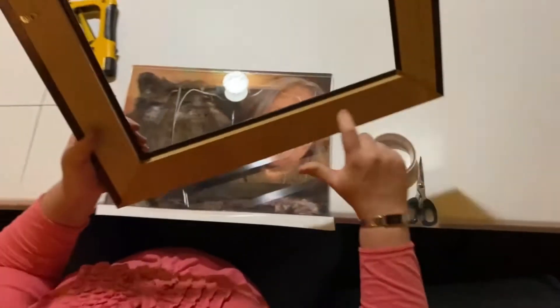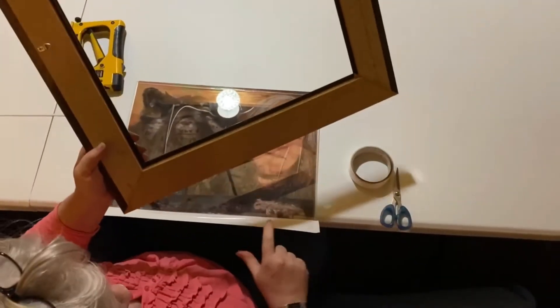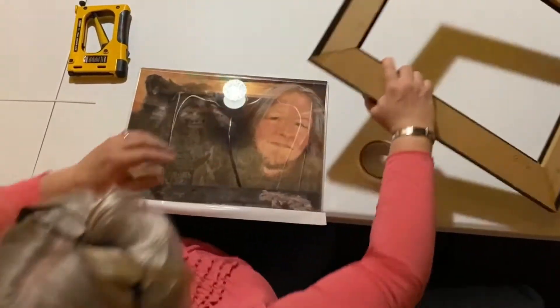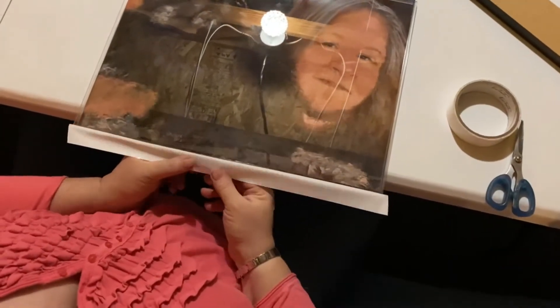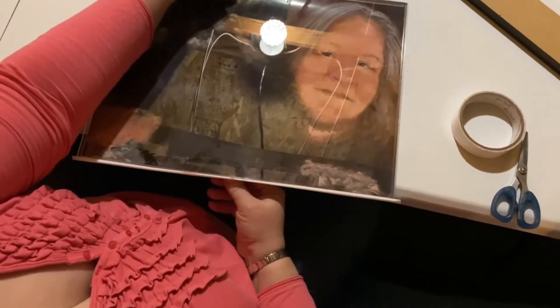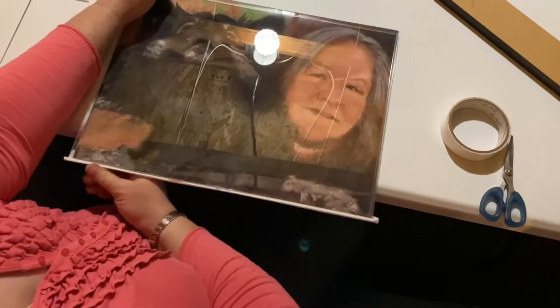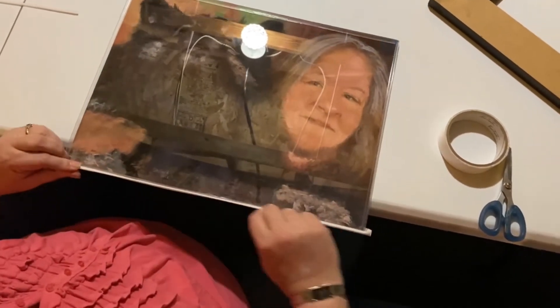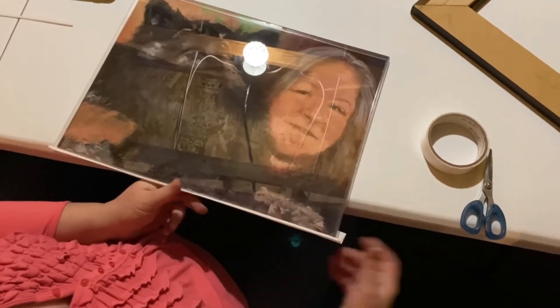As you can see, this little edge on the frame is going to cover the tape, so it's important that we don't make it too far on the front. Then we're just going to reach around and tape it to the picture backing, and we're going to do that on all four sides.